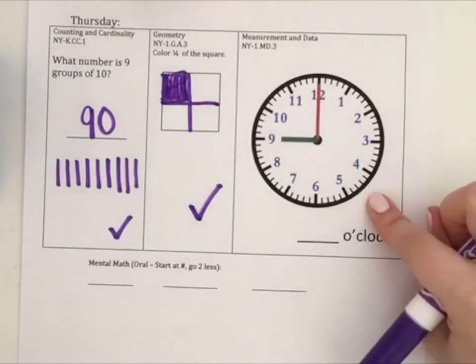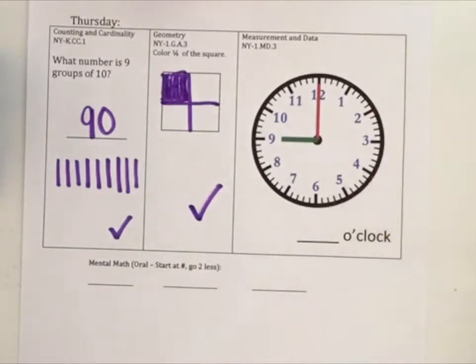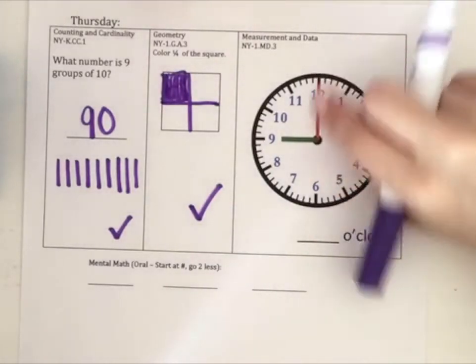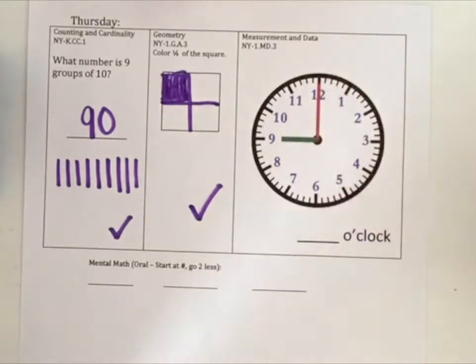For the next one, in this box, we need to tell what time it is. It's blank o'clock. I can tell what time it is by looking at the shorter hand. I know that it's o'clock because the long hand is at the twelve. The short hand will tell me what time it is.